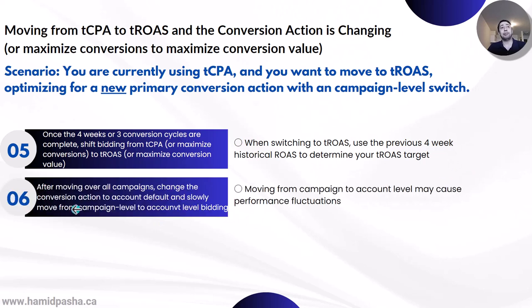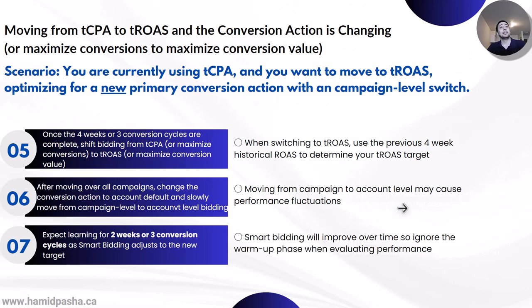After moving all your campaigns, if you want to move all your campaigns, you can change the new conversion action to account default and slowly move from campaign level to account level bidding. Moving from campaign to account level may cause performance fluctuations, so be aware of that. After changing your primary conversion action at the account level, you should expect a learning phase for two weeks or three conversion cycles as smart bidding adjusts to the new target. Smart bidding will improve over time, so ignore the warm-up phase when evaluating performance.